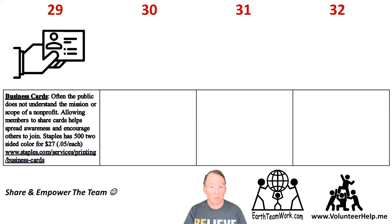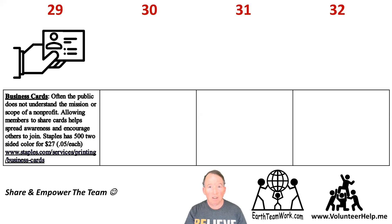Tool 29: Business cards. Often the public doesn't understand the mission or accomplishments of the organization. You could use a double-sided color business card to share with the public what you do, and leave an empty space for your members to fill in contact information as desired. Staples has an online business card option — 500 cards, double-sided color for about $27, which is $0.05 per card. It's an excellent way to recruit members and share what you do.